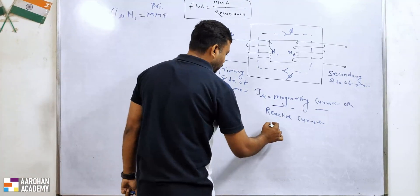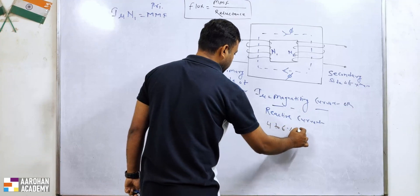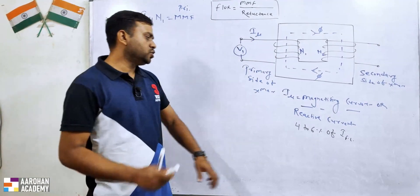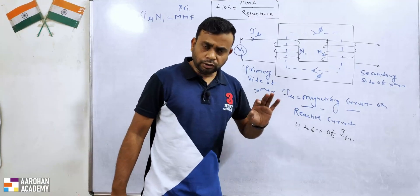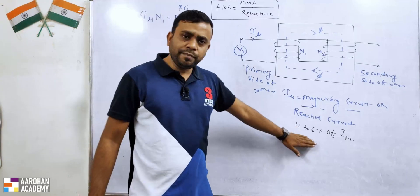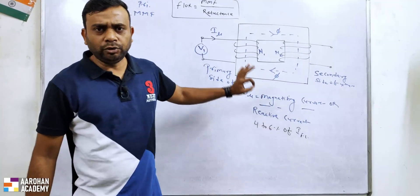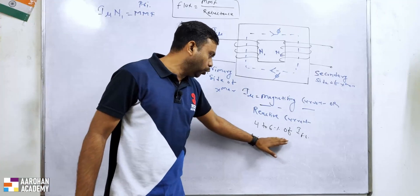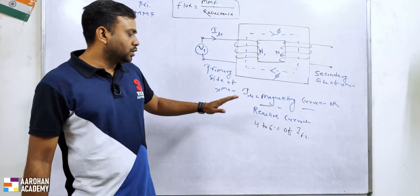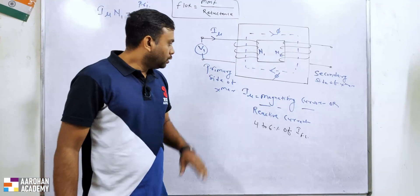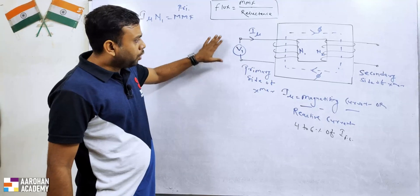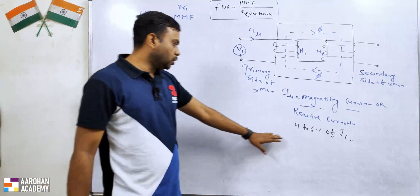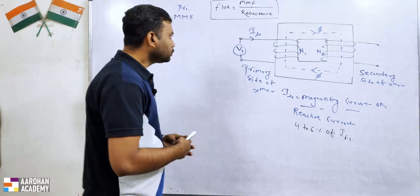This magnetizing current will be in the range of 4 to 6 percent of the full load current. Now the question arises: if we increase Imu beyond this range, what will happen to the transformer, and why do we take Imu only in the range of 4 to 6 percent? I'll give the answer in the coming videos. Right now our topic is to focus on how the induced EMF lags behind the flux.